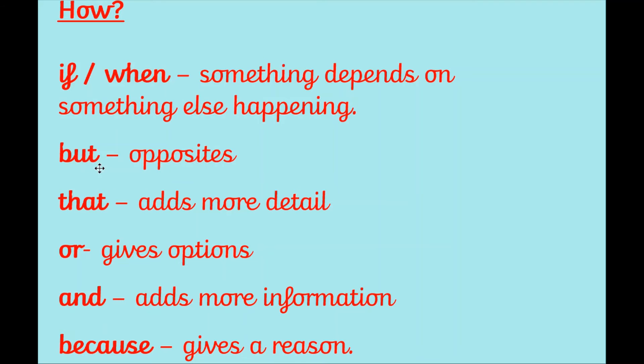But is used when there's some kind of opposite going on. You might be saying something good but something bad, something happy but something sad. That is used when we're adding more detail and it's often more detail about a specific thing, a noun that has just been mentioned in the first part of the sentence. Or is used when there are options to choose between. And just adds more information and you are all really good at using and because you learnt that one in year one. And the last one is because and we use because when we are giving a reason for something. And you are also really good at that one because you learnt that one in year one as well.